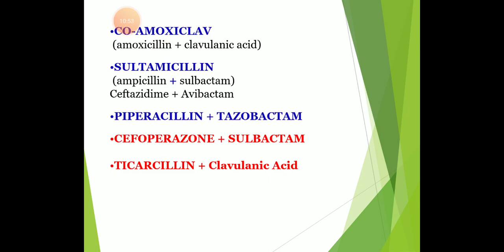Tazobactam is combined with piperacillin in a fixed dose combination of 3 g of piperacillin and 250 mg of tazobactam, given parenterally every six hours in pseudomonal infection. Clavulanic acid itself is produced by Streptomyces clavuligerus and has poor antimicrobial effect on its own. It is combined with amoxicillin and is effective against beta-lactamase-producing Staphylococci, gonococci, and E. coli. Amoxicillin and potassium clavulanate are available in fixed dose combinations of 500 mg and 875 mg of amoxicillin with 125 mg of clavulanate.